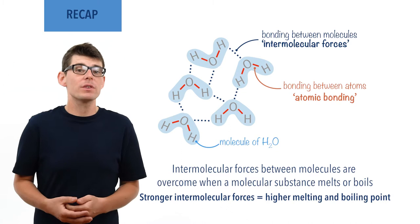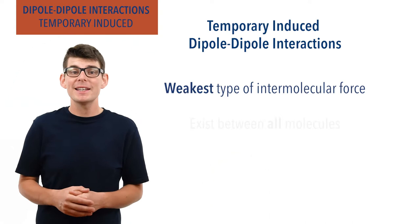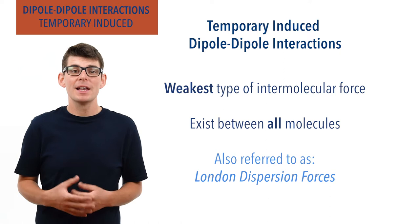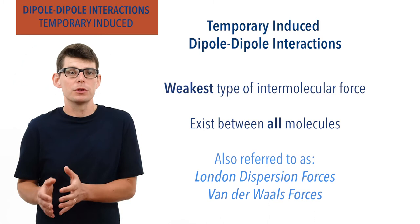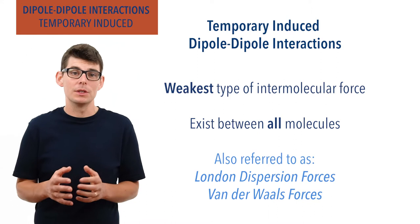Recap done — let's go! Temporary induced dipole-dipole interactions are the weakest type of intermolecular force and exist between all molecules. They are also referred to as London dispersion forces and van der Waals forces. Note that van der Waals forces is a more general term that is sometimes also used to refer to permanent dipole-dipole interactions. Make sure you check your course and exam board for the name they prefer you to use and stick to it. For this video they will be referred to as temporary induced dipole-dipole interactions, as that name can help students remember and understand what's actually going on.